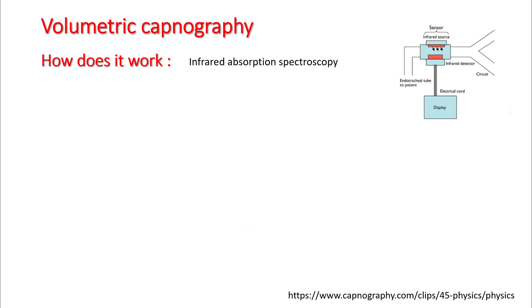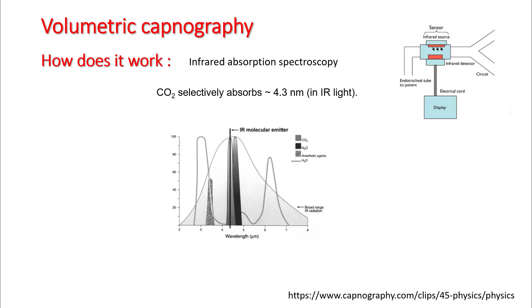The other method is volumetric capnography. Volumetric capnography can give you the value of the PCO2. Carbon dioxide selectively absorbs at around 4.3 nanometer width, which lies in the infrared region of light. So your CO2 concentration depends upon the absorption at this wavelength.